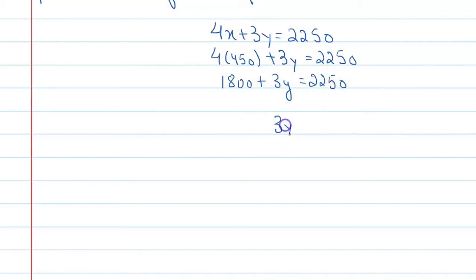So it is 1800 plus 3y equals 2250, and 3y equals 2250 minus 1800. We have taken this 1800 from here to the other side. So it is 450, and 3y equals 450, and y equals 450 upon 3. Here we will get 150.